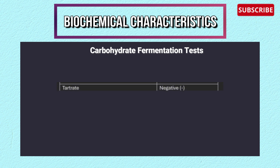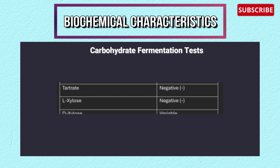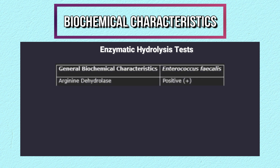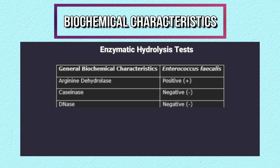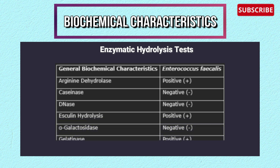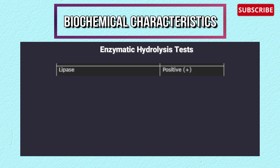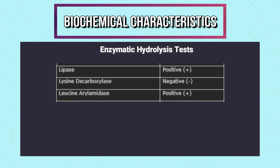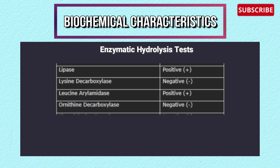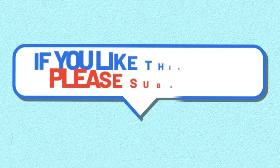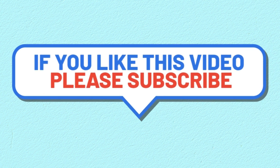Enzymatic hydrolysis tests: arginine dehydrolase positive, caseinase negative, DNase negative, esculin hydrolysis positive, alpha-galactosidase negative, gelatinase positive, lipase positive, lysine decarboxylase negative, leucine arylamidase positive, ornithine decarboxylase negative, phenylalanine deaminase negative, pyrrolidonyl aminopeptidase positive, tryptophanase positive.